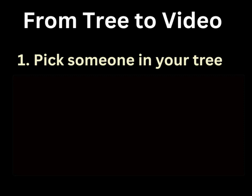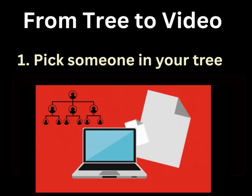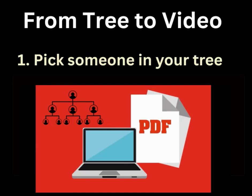Here are the four steps I'm going to walk you through. First, you'll pick a person in your family tree and export their life events as a PDF. I'll show you how to do that with a few clicks if your family tree is on Ancestry.com. If you've got family tree software, there'll be an export button somewhere on a person's profile page.